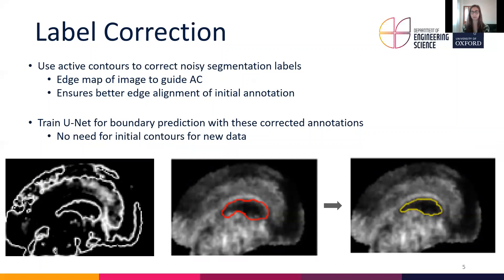Because active contours are able to align an initial contour with image edges so well, we wanted to use active contours to correct our noisy segmentation labels. We want to use an edge map of the image to guide the active contours, so that they can ensure a better edge alignment of our annotations.